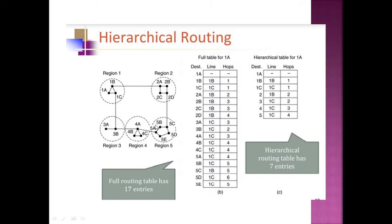Region 1 has 3 routers, region 2 has 4 routers, region 3 has 2 routers (3A and 3B), region 4 has 3 routers, and region 5 has 5 routers. To connect all these different regions, we cannot rely on a single large table — scanning it would consume more CPU time. So we move to the hierarchical table.